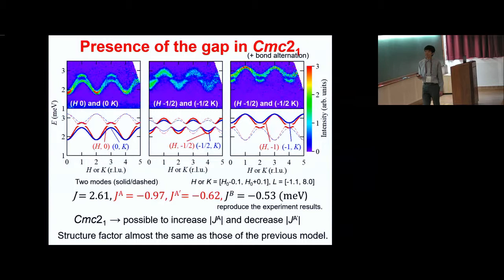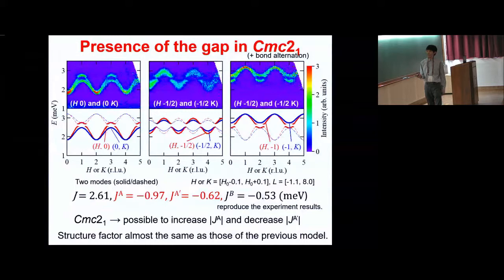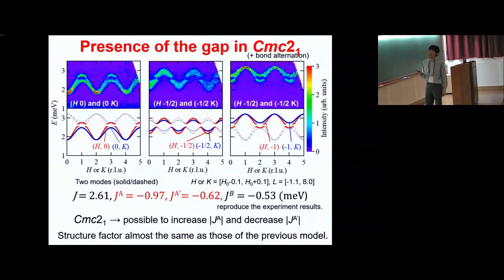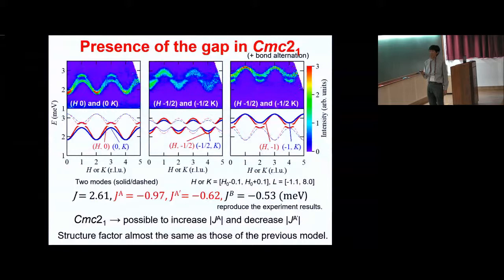To explain the band gap, a bond alternation along the A-axis must be introduced. I present the parameter sets allowed under space group CMC21 that best reproduce the experimental results. Under CMC21, it is possible to increase the magnitude of JA and decrease that of JA'. By this bond alternation, an upper and lower band inversion is induced, leading to the wave-vector-independent gap at 2.6 meV. If the bond alternation is small, the structure factor becomes almost the same as in the previous model at the same energy-momentum range, and the band gap is induced at 2.6 meV as shown.